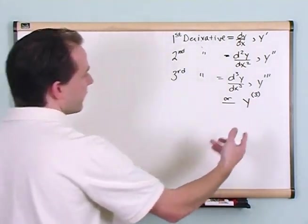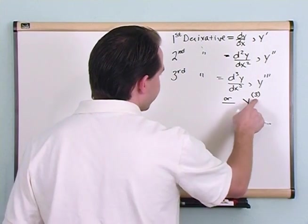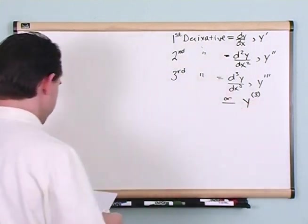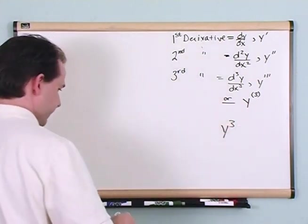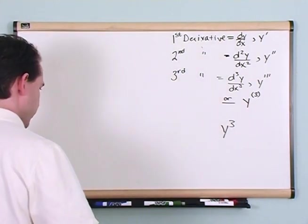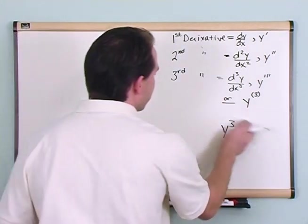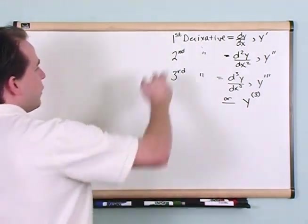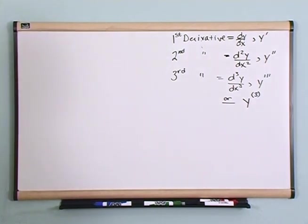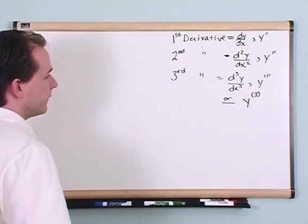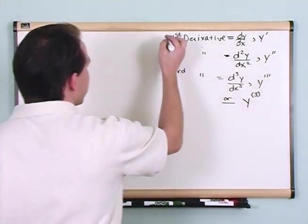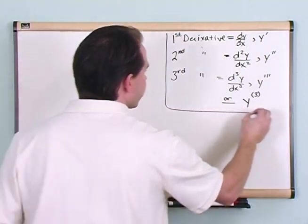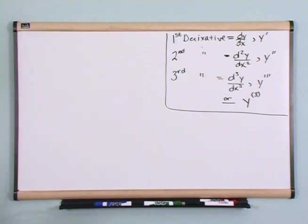Also, when you get up to the fourth, fifth, and sixth derivative, putting all those little marks is kind of a pain, so another way to write it is y with a little parenthesis and then a 3. The parenthesis indicates you're not taking an exponent — this is not y to the third power, this is the third derivative of y. You can take an infinite number of derivatives; you can keep taking derivatives until you get nothing, and eventually you will in most cases.